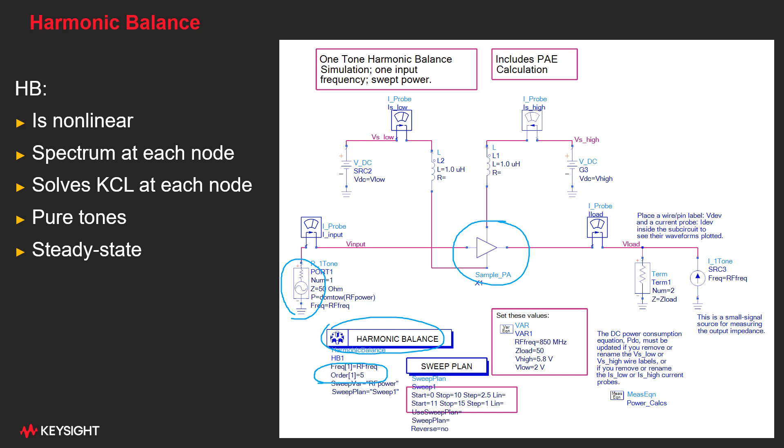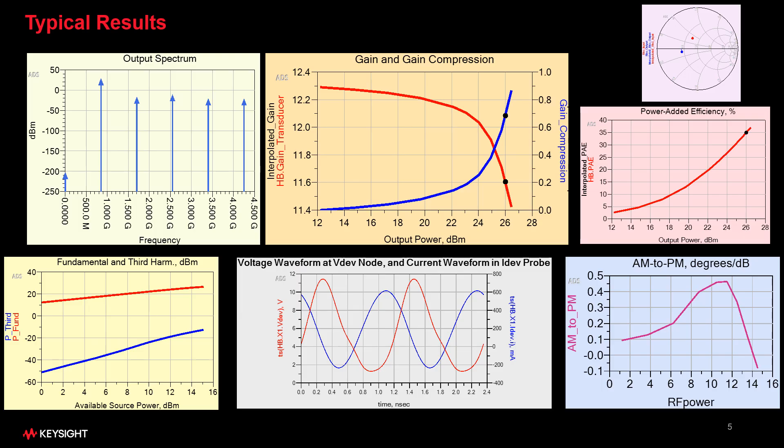And it solves for the steady state, no startup transients or anything like that. And notice how we've inserted a few current probes so we can measure the current in these wires and make some measurements after the fact. We're also showing a sweep of the RF input power with this sweep plan component.